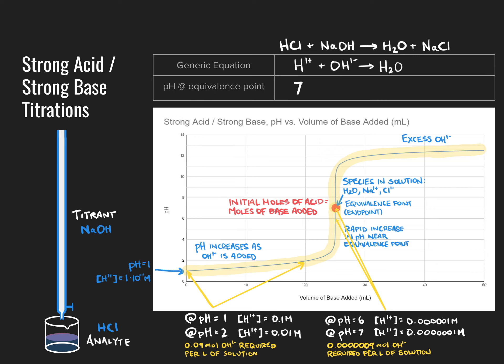As we approach the endpoint of the titration, a tiny drop of base can represent a large percentage change in the number of hydrogen ions present. After passing the endpoint into excess base, an additional drop of hydroxide ion represents only a small incremental increase in hydroxide concentration, so each drop no longer changes concentration by meaningful orders of magnitude, and the pH curve starts to flatten out again.